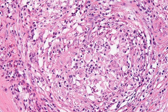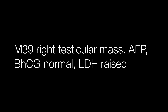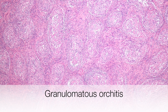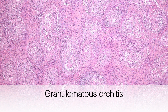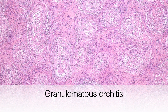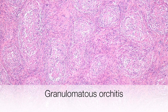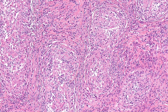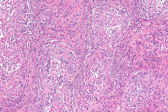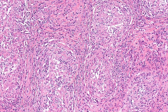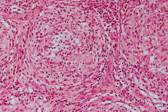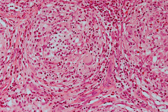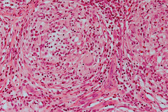Case number two was a male of 39.5 with normal AFP and beta-HCG, but the LDH was raised. He had a right testicular mass. This is a case of granulomatous orchitis.